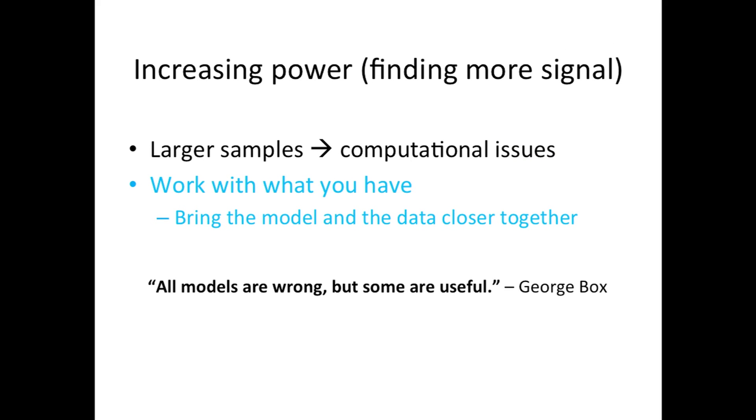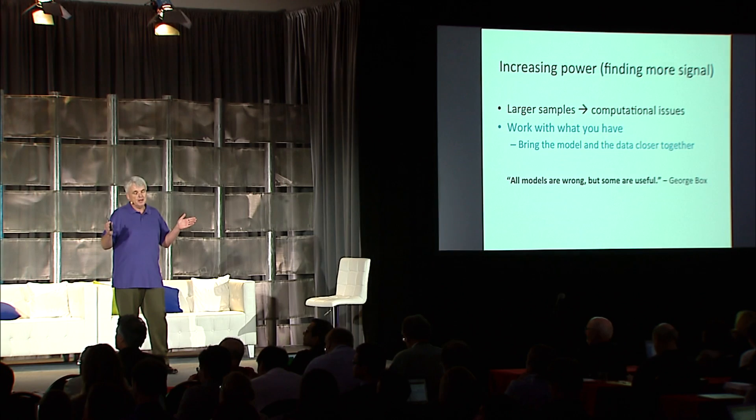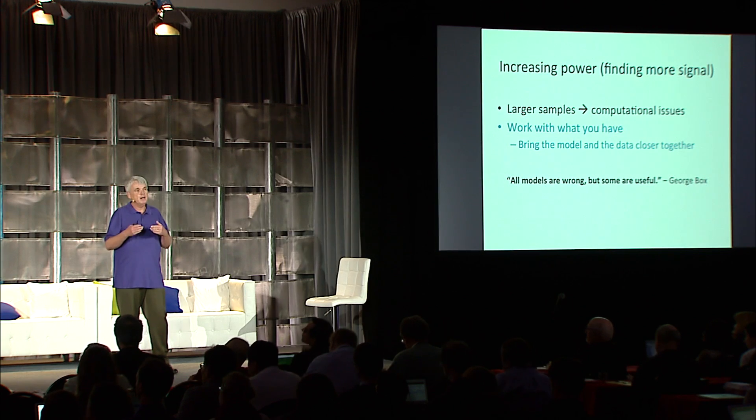Now let's go to the other case where we have the data that we have, but we'd love to get more power out of it. The basic fundamental idea here is an extension of a very famous quote by George Box who said, 'all models are wrong, but some are useful.' The idea behind getting more power is to try to bring your model and data closer together. Your model has a certain set of assumptions, your data has a certain set of properties. One way is to bring the model to the data — study the data, think about it, build a model that represents the data well. The other way is to bring the data to the model: leave the model alone and transform the data to make its properties closer to the assumptions of the model.